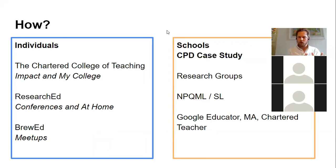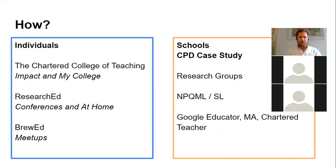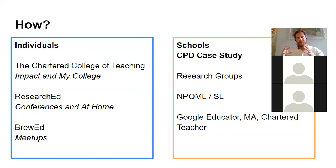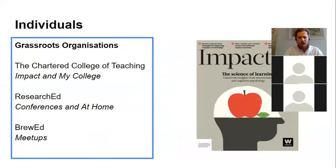As an individual, there are different grassroots organisations you can get involved with — and by grassroots I mean set up by teachers for teachers who want to engage with evidence and research. These include the Chartered College of Teaching, ResearchED, and BrewEd. The Chartered College of Teaching is a fantastic body who created a website called MyCollege. Once you have membership — I think it's about £50 as an individual — they put together collections of evidence in distinct folders: COVID-19, student behaviour, SEND, retrieval practice.